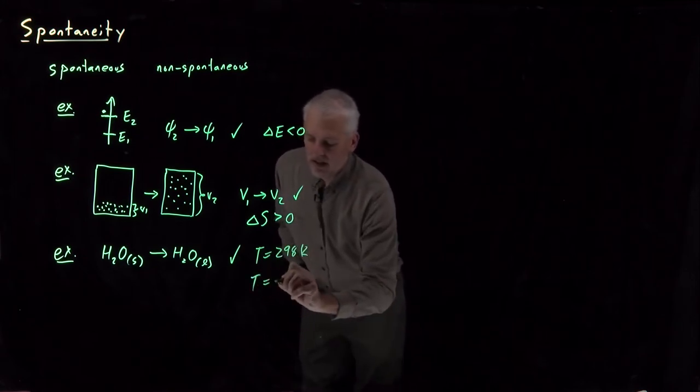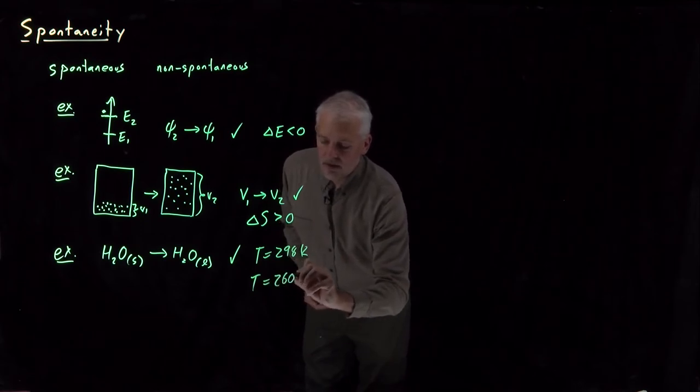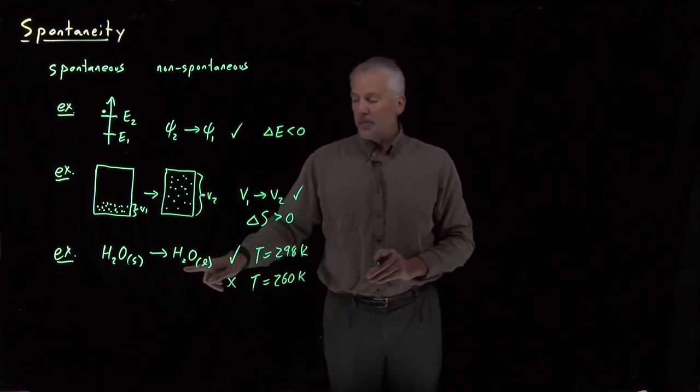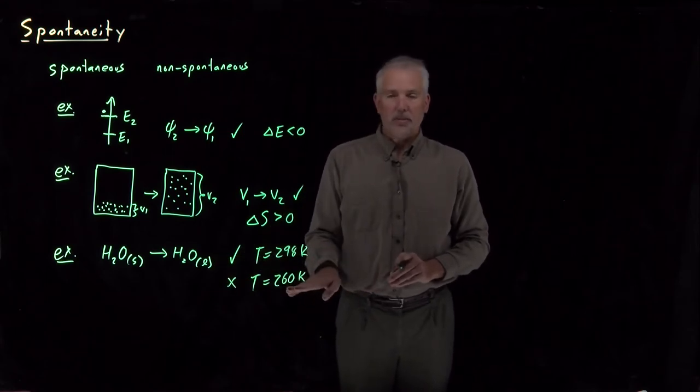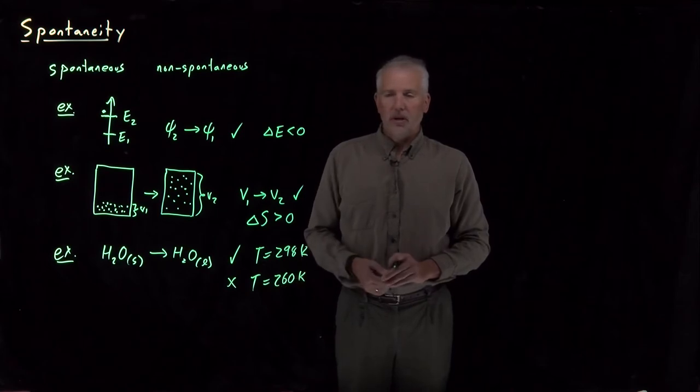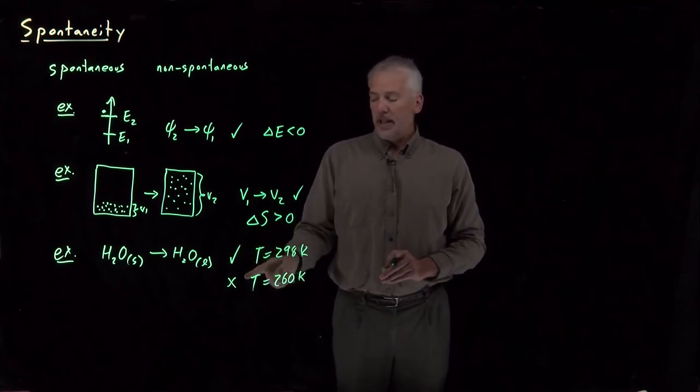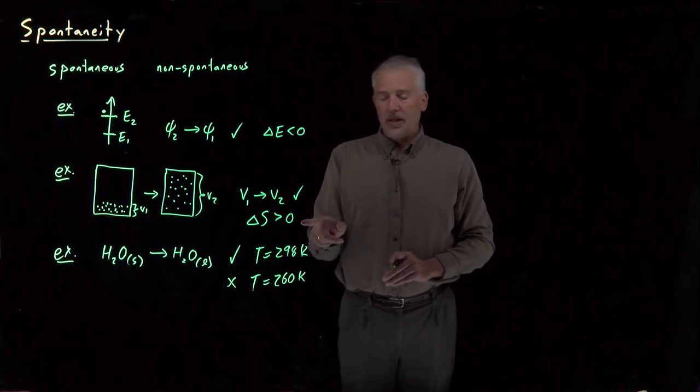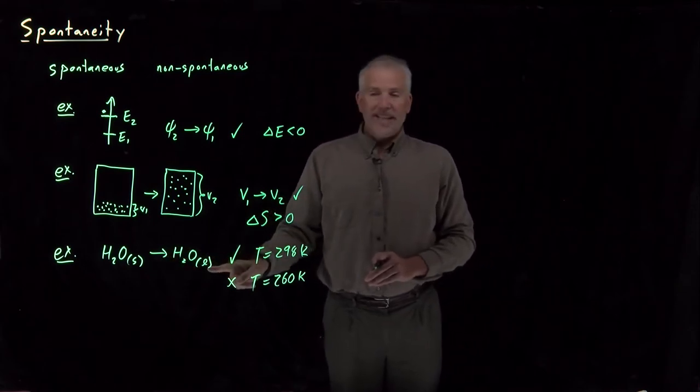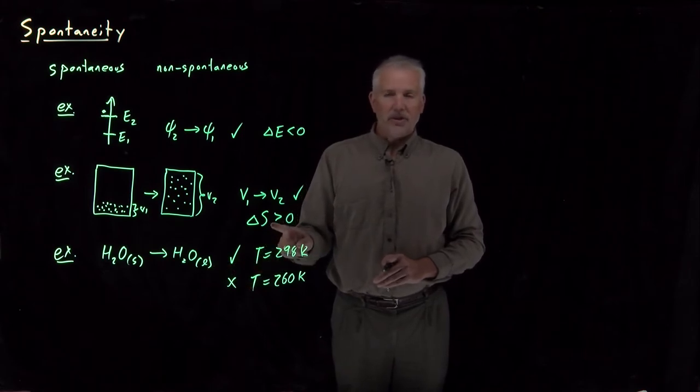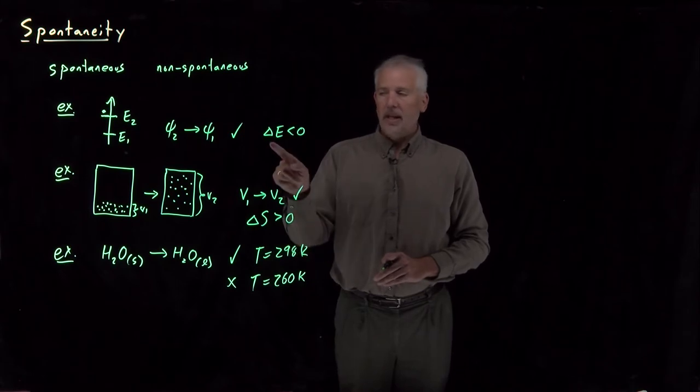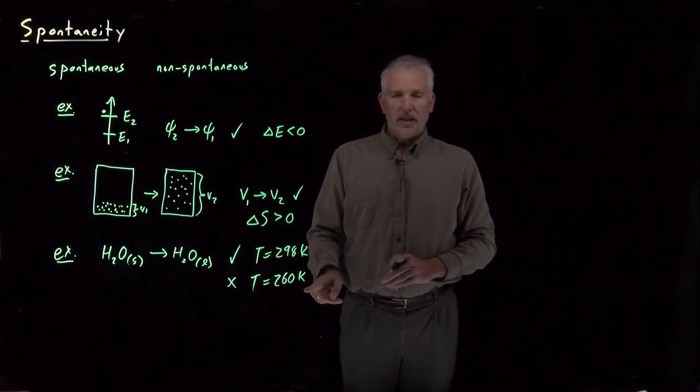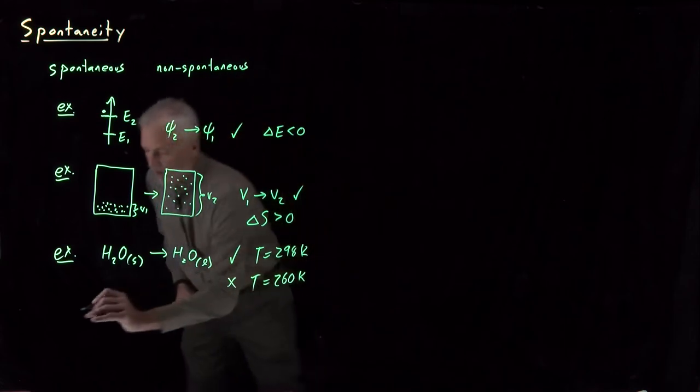But what if we did that outside on a very cold winter's day where the temperature is below freezing, 260 Kelvin? Then, of course, it wouldn't be spontaneous. Ice would remain in the solid phase and would not spontaneously melt to be in the liquid phase if we're at a temperature below 273 Kelvin, below the melting point of water. So sometimes a process is spontaneous or not, depending on the conditions. And as we'll see soon enough, the reason this is true is because the arguments about energy and the arguments about entropy conflict with one another. Melting ice actually increases its energy, but also increases its entropy. So entropy dictates that the water should melt, energy dictates that the water should freeze. Under some conditions, the entropy wins. Under other conditions, the energy wins.